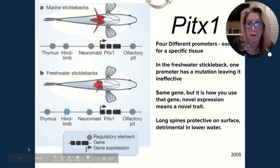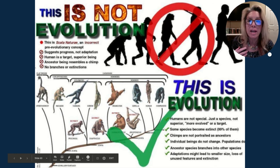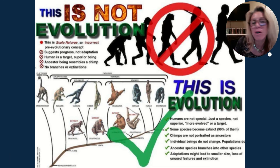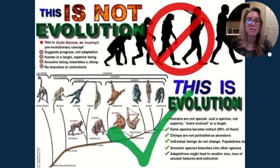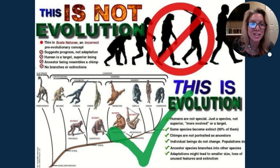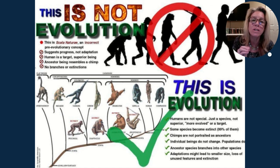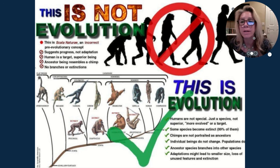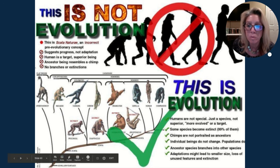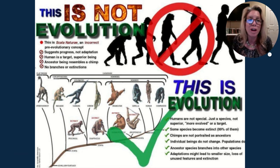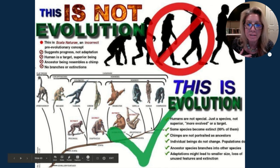What is evolution — and what is it not? The common diagram of an ape gradually walking upright to become a human is not evolution; that goes back to Scala Naturae and Lamarck. It suggests progress rather than adaptation and implies the chimp was trying to become a human — goal-oriented. What evolution actually looks like is branching: if you're adaptive you stay; if not, you go extinct. In fact, 99% of all life that has ever walked this planet is already extinct. Chimps are not our ancestors — we may share common ancestors.